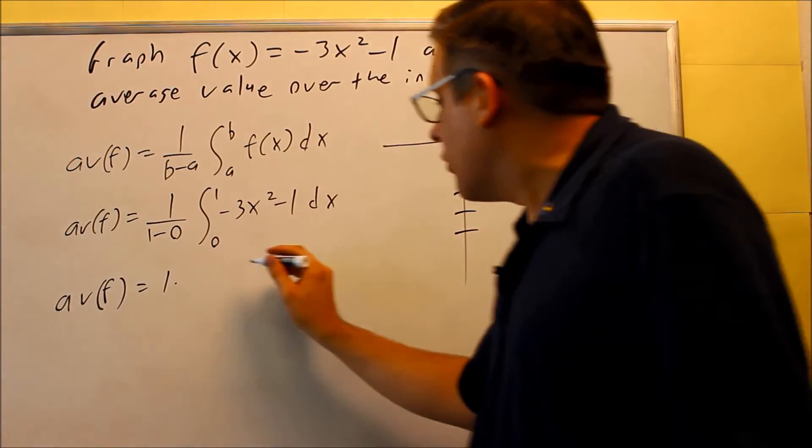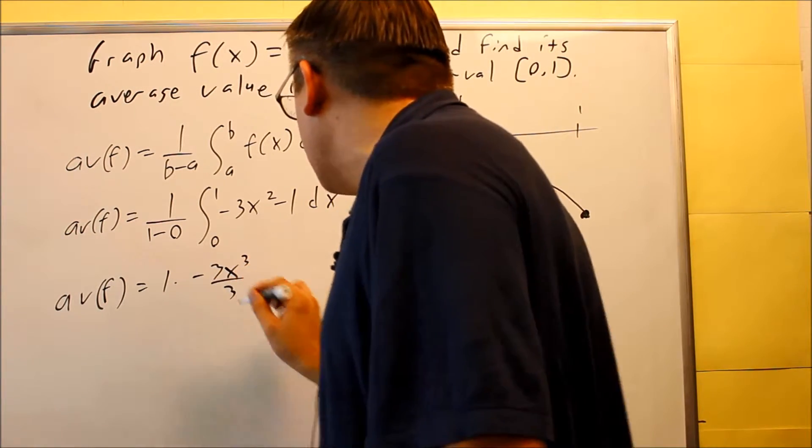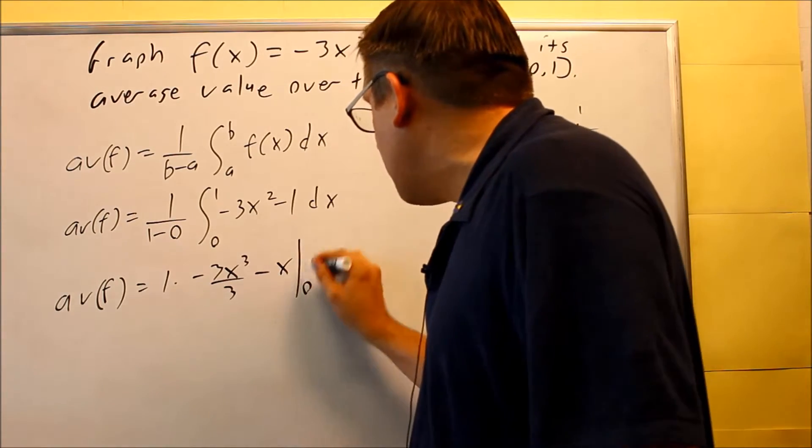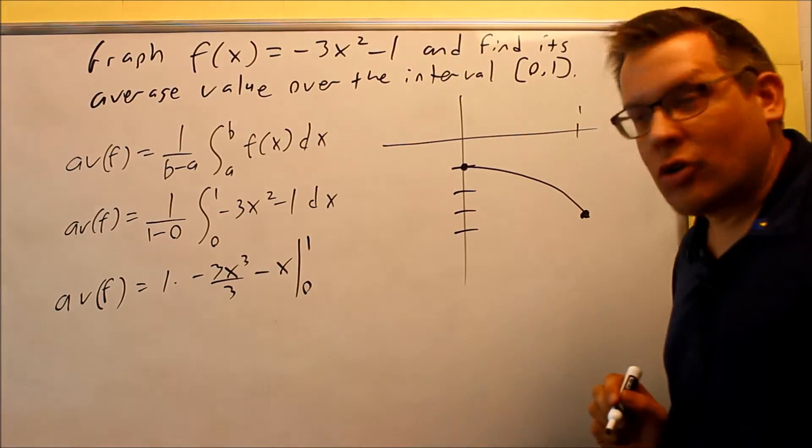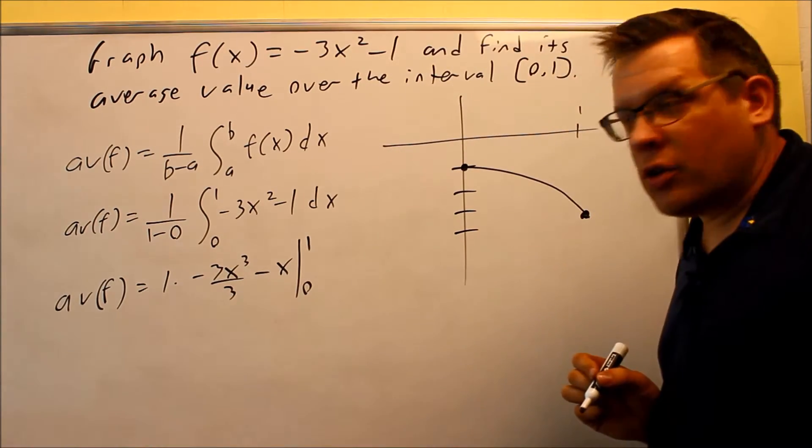So we're going to take the antiderivative, negative 3x cubed over 3, then minus x, and then that's going to be going between 0 and 1. So we've got antiderivative, setting it up, now we'll put the numbers in.